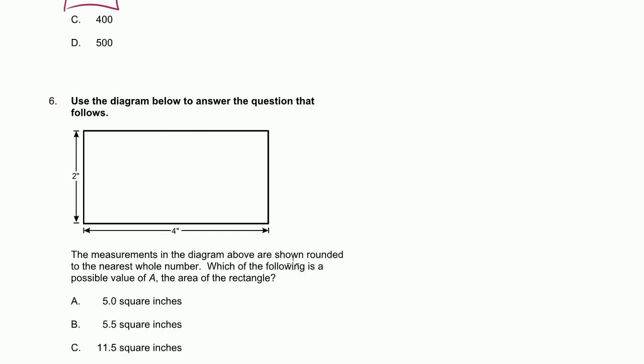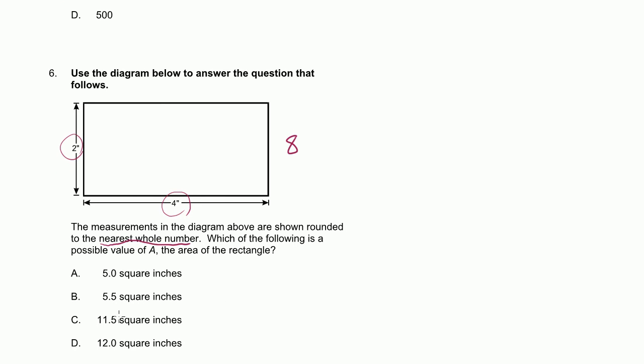The measurements in the diagram above are shown rounded to the nearest whole number. Which of the following is a possible value of A, the area of the rectangle? So what they're saying is that these numbers, these aren't the actual values if we were to be precise about it. They just rounded them to the nearest whole number. When you just multiply these two things to figure out the area, you get an area of 8 square inches. But when you look at the choices, I don't see an 8 square inches. It seems like it's either going to be B or C. And if you just look at these two numbers, which one's closer?